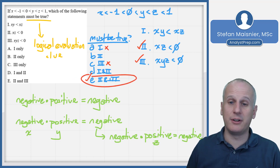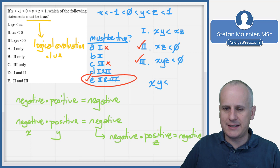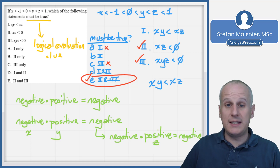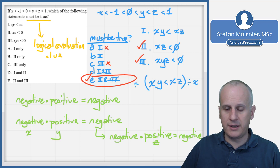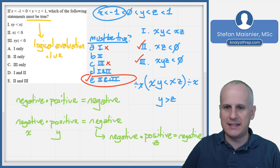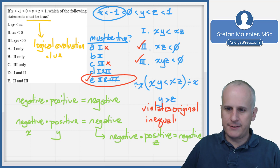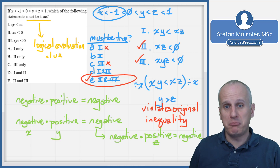For Roman numeral 1 technically: if xy < xz, we can divide both sides by x, but since x is negative we must flip the sign, giving y > z. That directly violates the original compound inequality where y < z. So Roman numeral 1 is false, and the correct answer includes only Roman numerals 2 and 3.